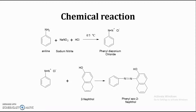The importance of this diazotization reaction is that the diazonium salt formed is only stable at 0 to 5 degrees Celsius. If we add another chemical entity to this phenyl diazonium chloride, it will readily react, and depending on which chemical entity we use, different products are formed. Here, phenyl diazonium chloride reacts with 2-naphthol (beta-naphthol), leading to the formation of phenyl azo-2-naphthol. If you observe its structure, there is a presence of N=N (azo functional group). That is why this compound is called phenyl azo-2-naphthol — and it is a dye used for coloring different fabrics.